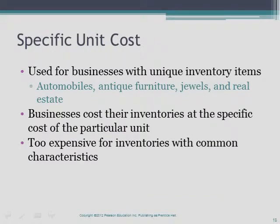Some businesses deal with unique inventory items such as automobiles, antique furniture, jewels, and real estate. These businesses cost their inventory at the specific cost of the particular unit — this is called the specific unit cost method, also known as the specific identification method. This method is too expensive to use for inventory items that have common characteristics such as bushels of wheat, gallons of paint, or auto tires. Under specific unit cost, we recognize cost of goods sold and relieve inventory for the specific cost of the specific units that are sold.